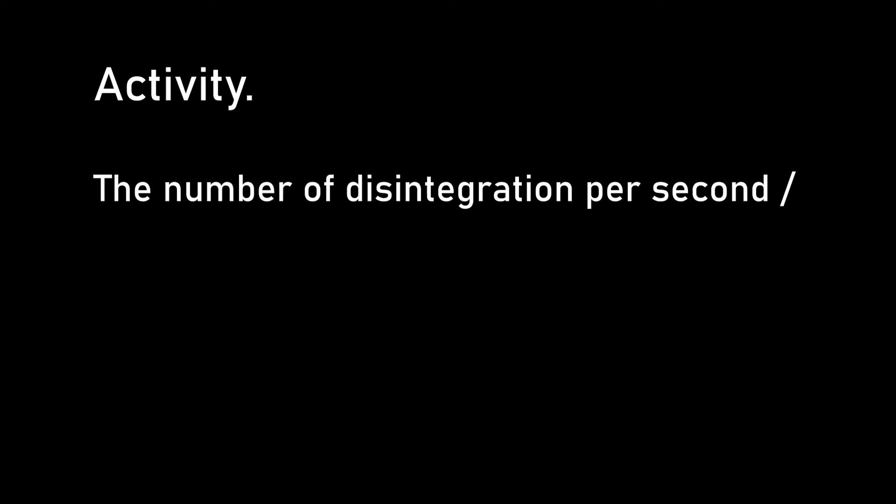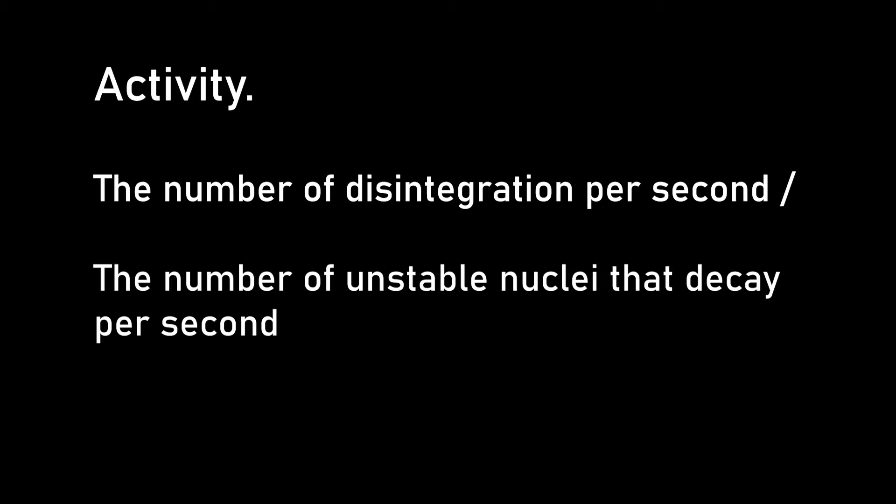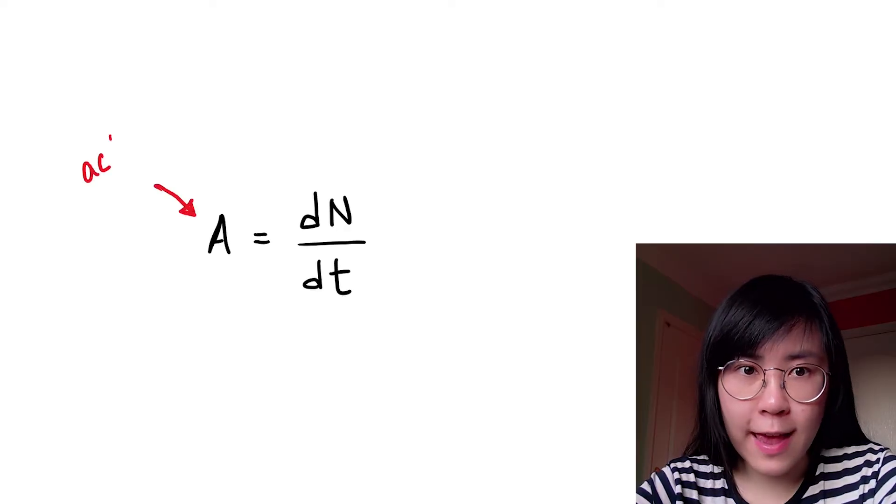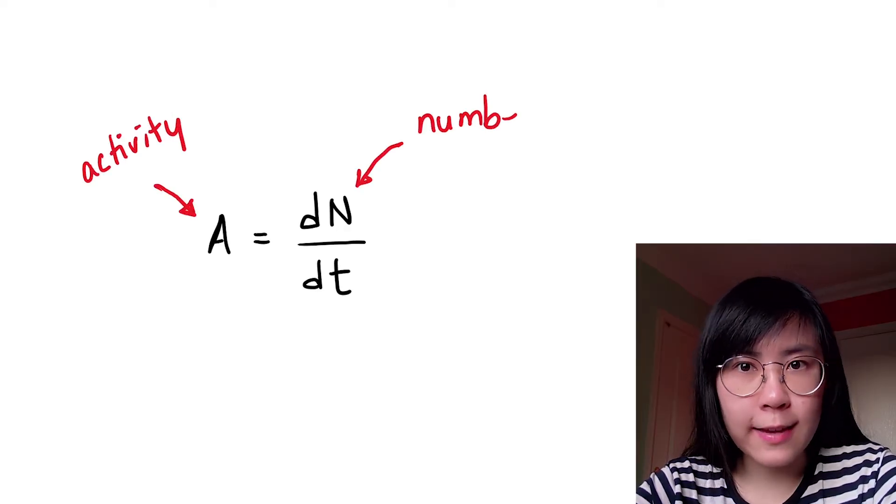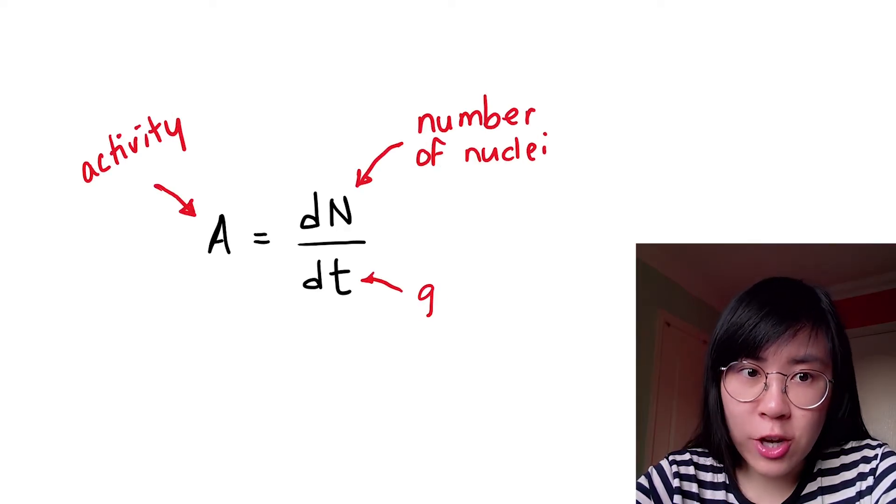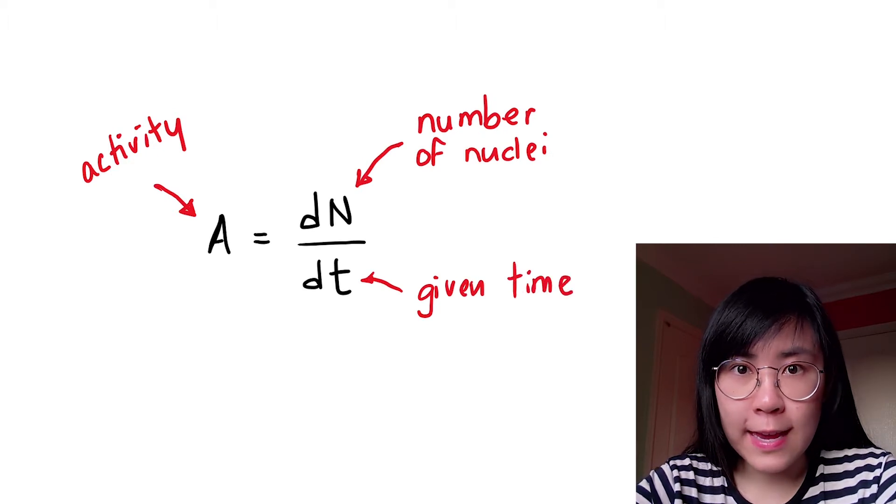In nuclear physics the activity is defined as the number of disintegrations per second or you can also say it's the number of unstable nuclei that decay per second within a sample. That's why we can write the activity A is equal to ΔN over Δt. That's a change in the number of nuclei in a given time.